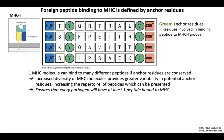For any given MHC molecule, there are only a few anchor residues that are required for peptide binding. The remaining residues between the anchor residues, shown in the white boxes here, can exhibit any amino acid sequence, since the biochemical properties of these individual amino acids don't contribute to peptide loading onto MHC. This brings up a key point: a single MHC molecule can bind to many different peptide sequences as long as the anchor residues are conserved.